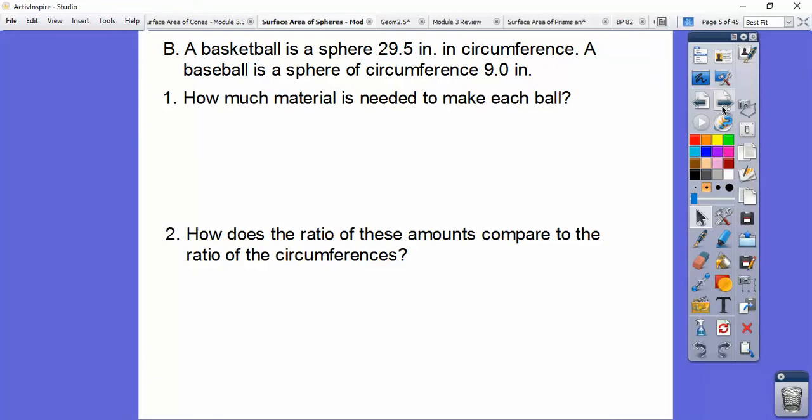So a basketball is a sphere that has 29.5 inches in circumference. That's the great circle, the biggest circle that goes around the outside. A baseball is a sphere that has circumference of 9.0 inches. How much material is needed to make each ball?